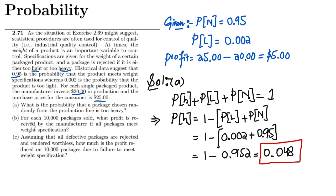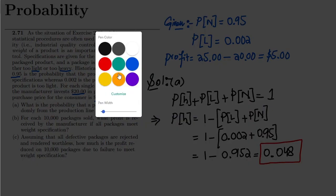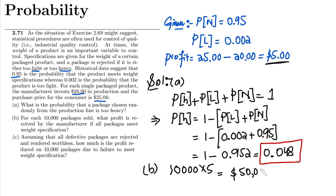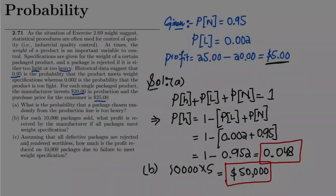For part B: for each 10,000 packages sold, what profit is received by the manufacturer if packages meet weight specifications? For each package we found a profit of $5, so the total profit for 10,000 packages would be 10,000 multiplied by $5, which equals $50,000.